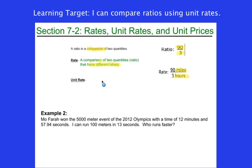The definition for a unit rate you see here is a rate where the first quantity is compared to one of the second quantity. So that's what we're talking about. Not just 90 miles in three hours. How many miles do I go in one hour? Again, that word compared is very important here.